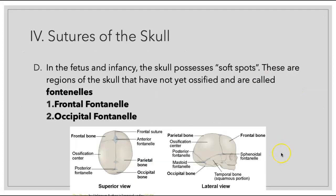When we are a fetus and early on in our infancy, our skull possesses soft spots. These regions in the skull have not yet ossified and we call them fontanelles. Anteriorly, we're going to find our frontal or anterior fontanelle, and more posteriorly we will find our occipital or posterior fontanelle.